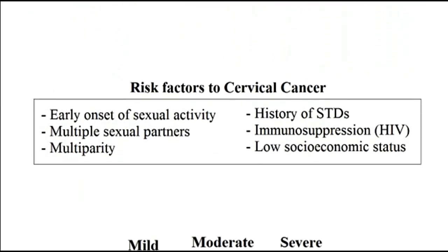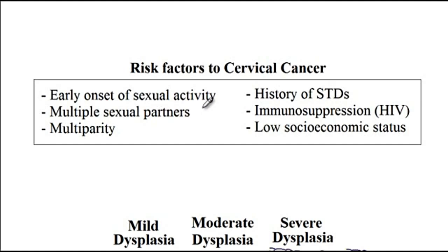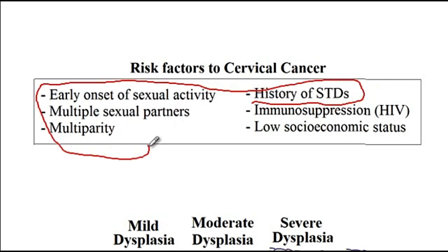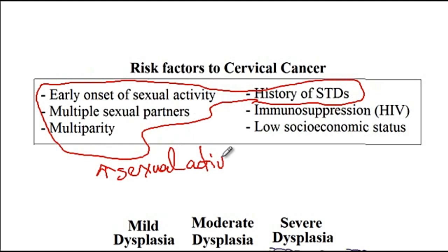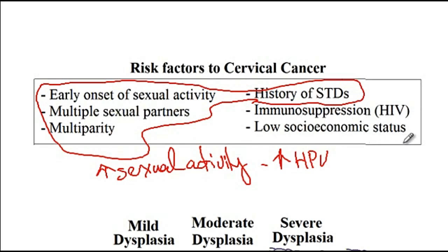As for risk factors for cervical cancer: early onset of sexual activity, multiple sexual partners, multiparity, and history of STD. Essentially, increased sexual activity increases the risk of HPV infection and is associated with increased risk of cervical cancers. Other risk factors include HIV infection as well as low socioeconomic status.